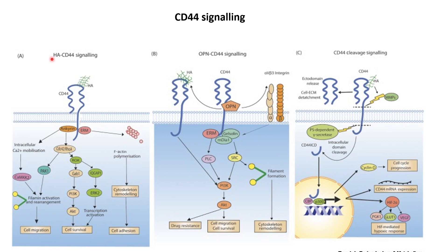There are different kinds of signaling pathways shown in this figure. The first one is the HA and CD44 signaling pathway. HA, or hyaluronic acid, is usually found in the extracellular matrix near soft tissues. When HA interacts with CD44, it triggers different kinds of pathways, one of the major ones being intracellular Ca2+ mobilization, which disrupts the Ca2+ equilibrium within the cells.